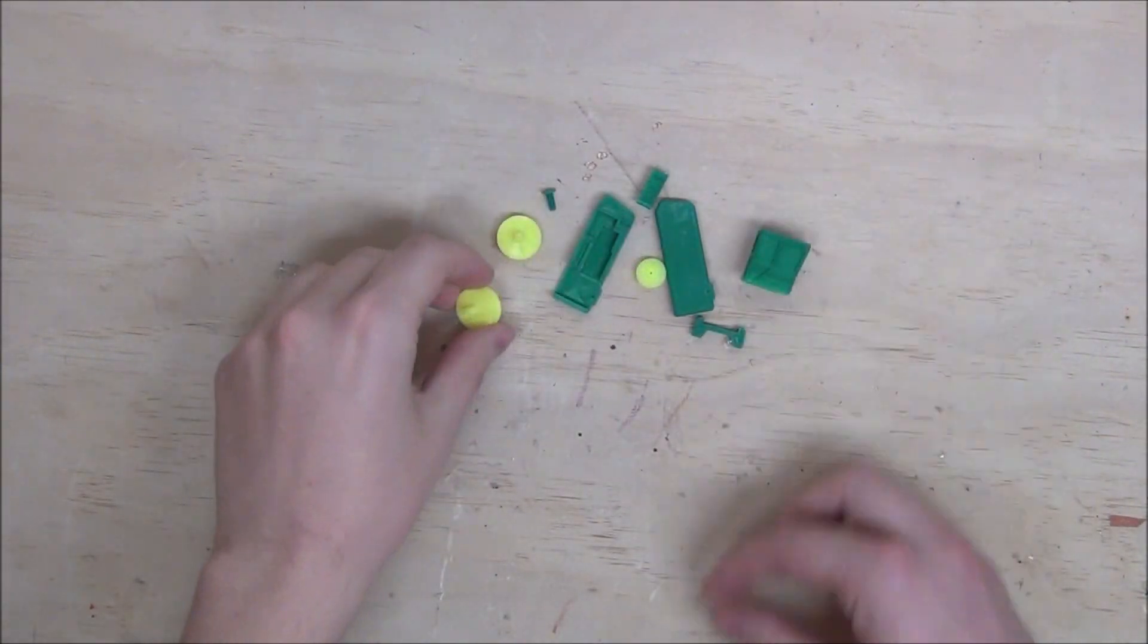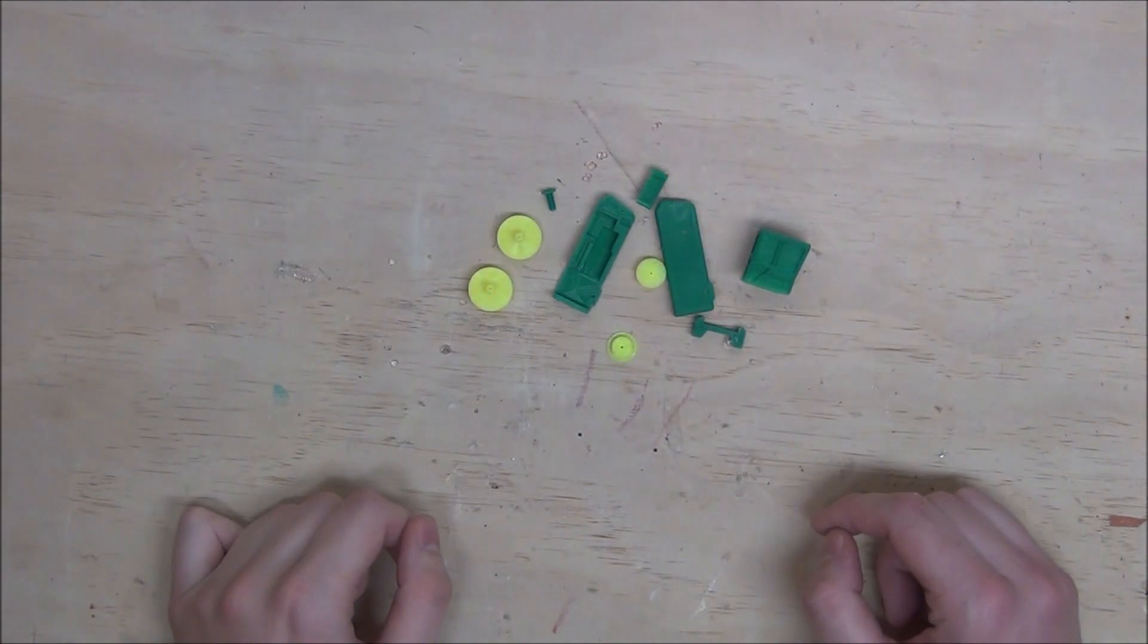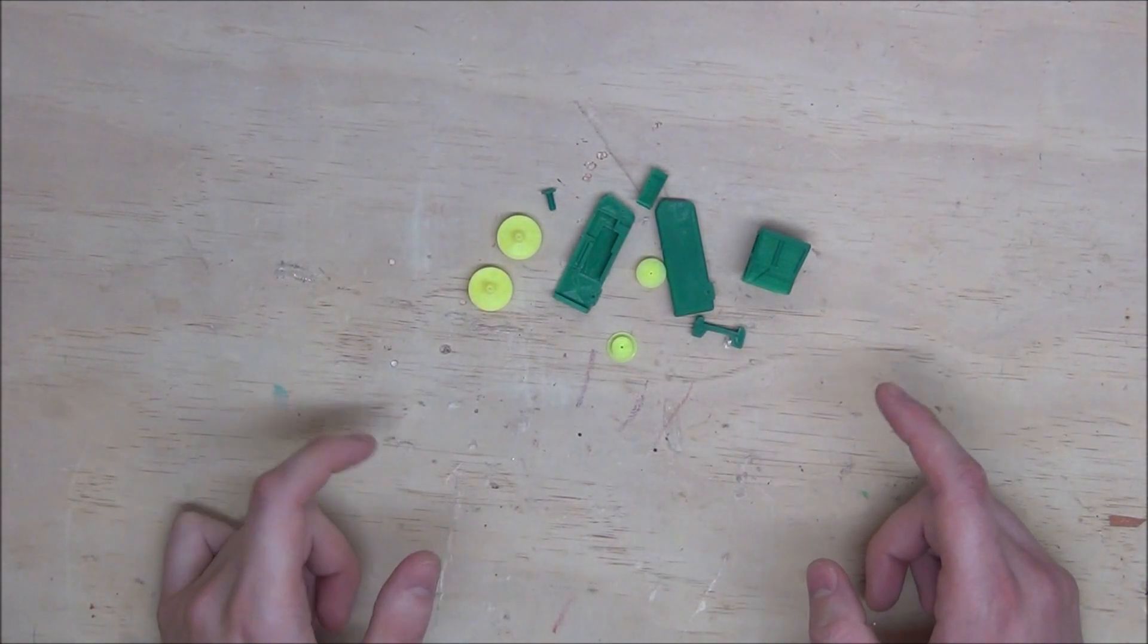And here are all of our parts after they've printed. As you can see, I printed them in both yellow and green, which match the John Deere tractor scheme.